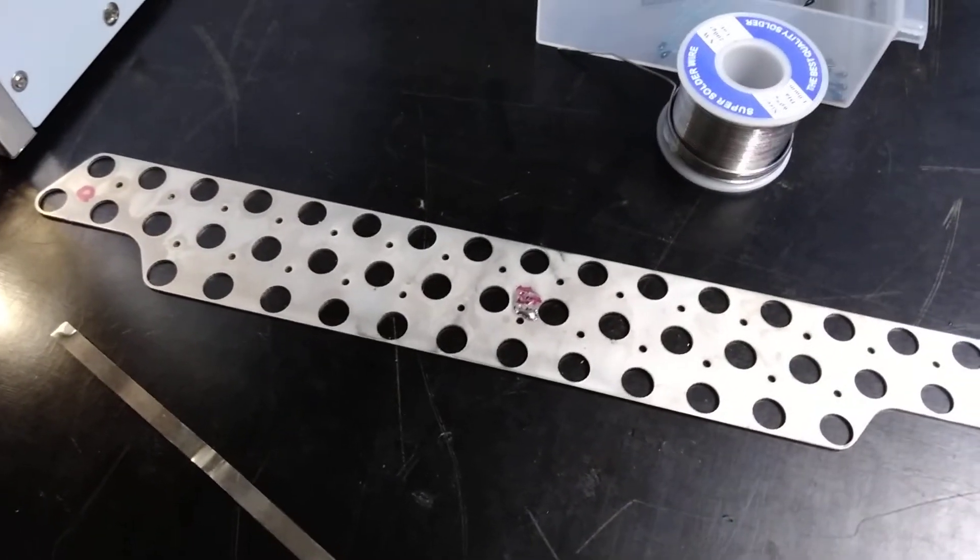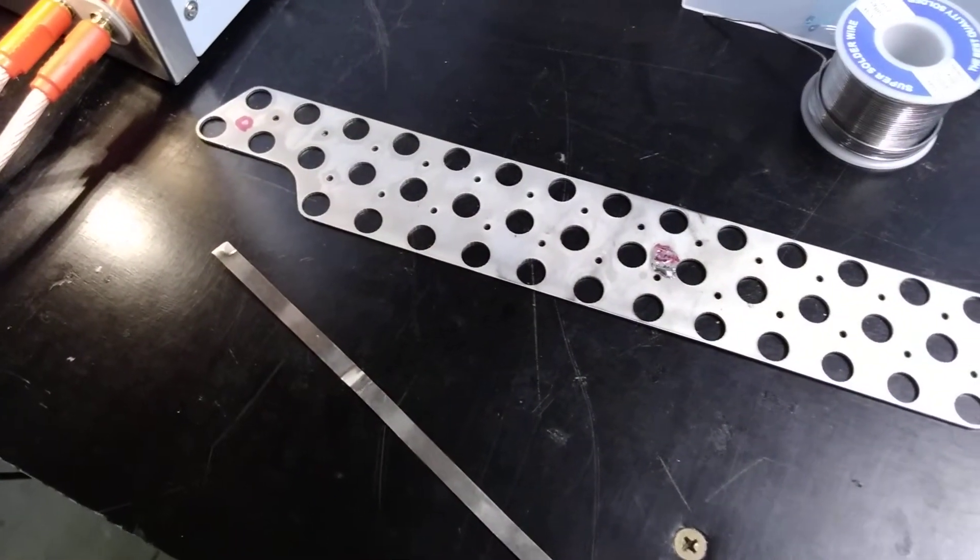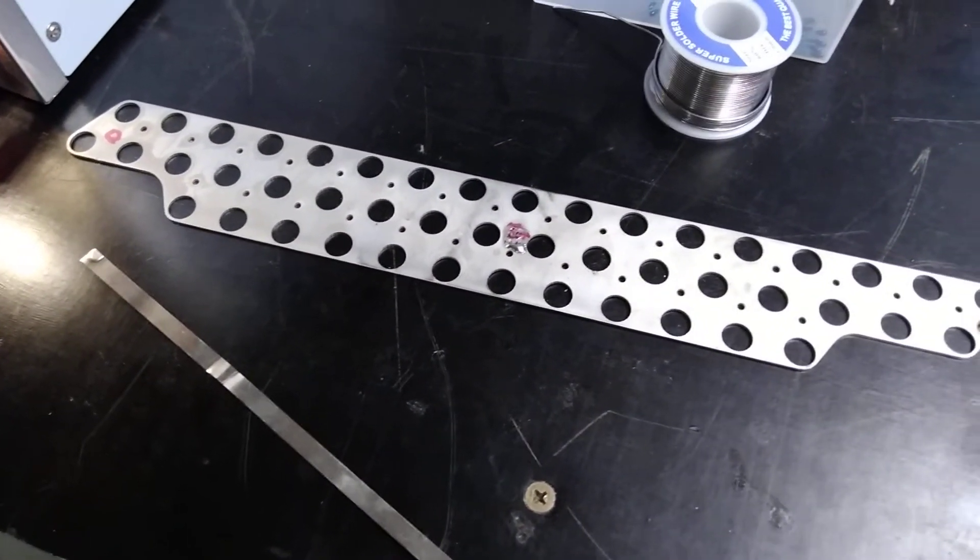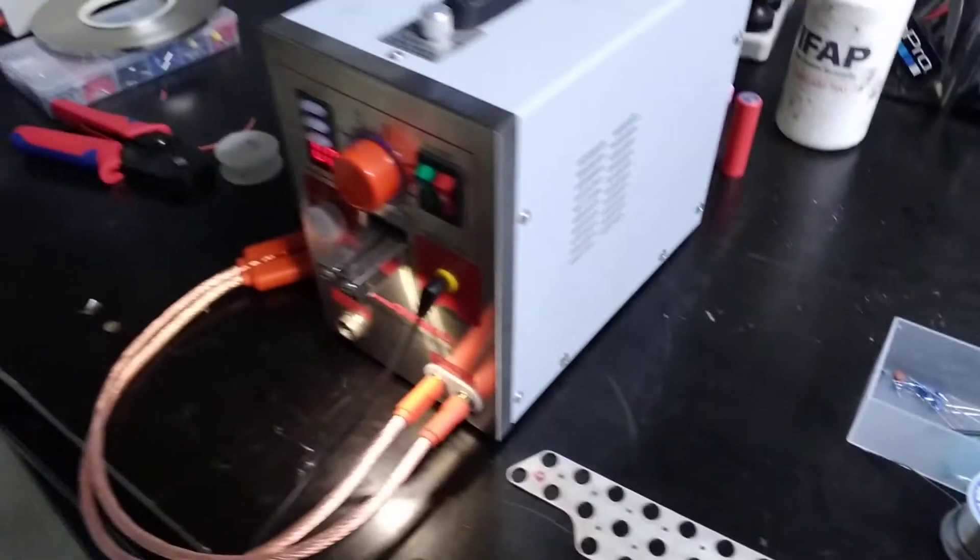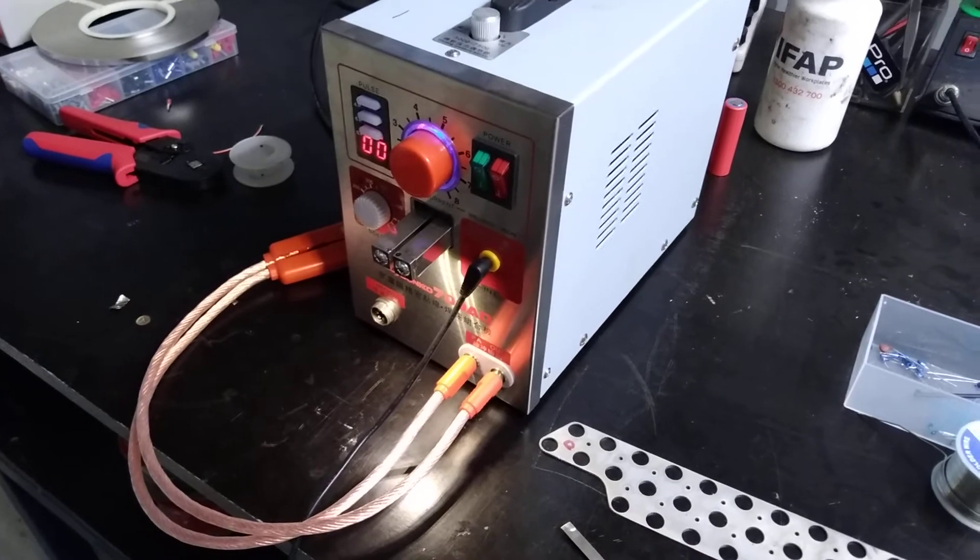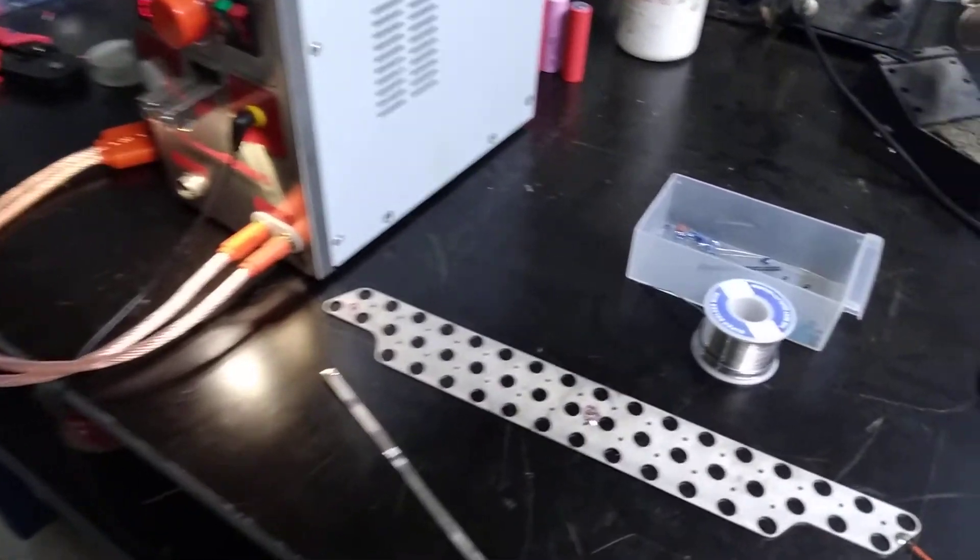I don't unfortunately have access to a wire bonder so I'm going to have to use nickel tabs. Nickel coated aluminium will take a spot weld if you've got a half decent spot welder, but my Sunco spot welder is not in that camp.